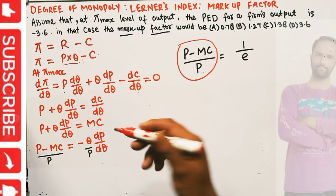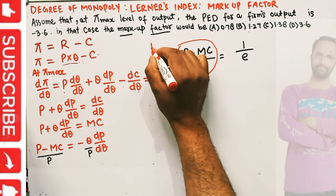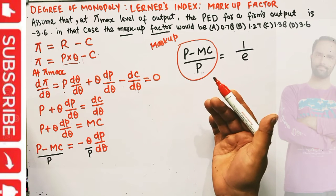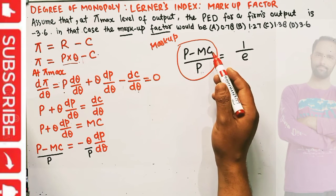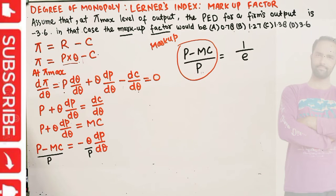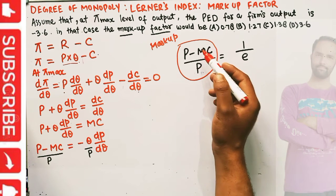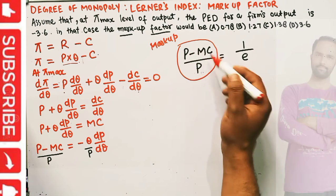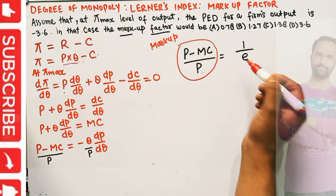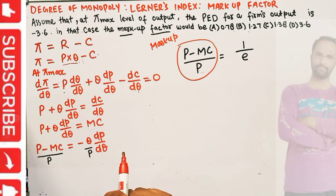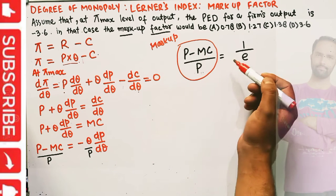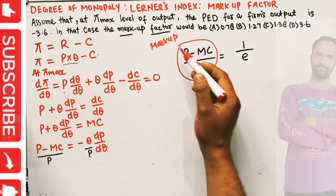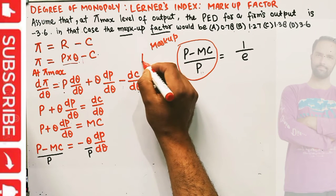The term (p - MC)/p is called the markup. It tells us the percentage amount by which price is above the marginal cost. Notice that this markup is inversely related to the price elasticity of demand — the less elastic the demand, the more markup the firm can charge.